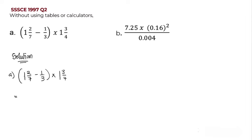One multiplied by seven is seven, plus the numerator two gives us nine, so we now have nine over seven, minus one over three. We do the same for the second mixed fraction: one multiplied by four gives four, plus three is seven, so we have seven over four.